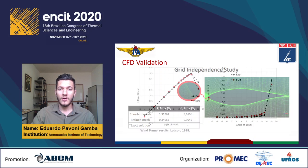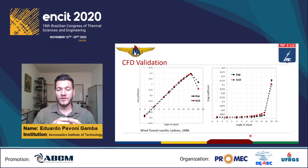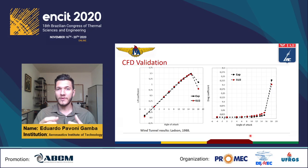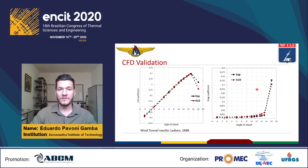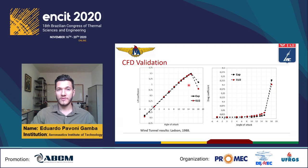We applied the Navier-Stokes equations with the Spalart-Allmaras turbulence model on this mesh and performed simulations on the NACA 0012 airfoil. To validate it, we compared numerical results with experimental results from wind tunnel tests. These two graphs show the lift coefficient and drag coefficient, and we can see very good agreement between numerical and experimental results.